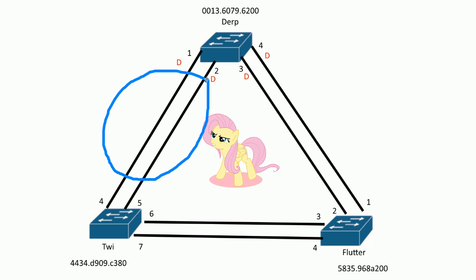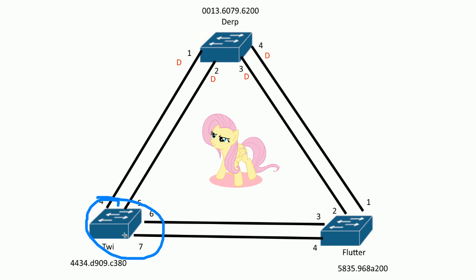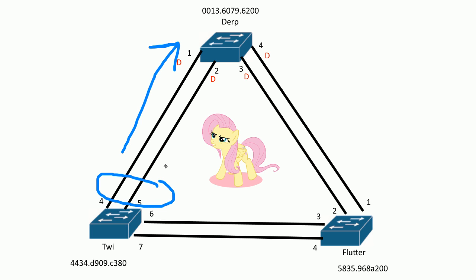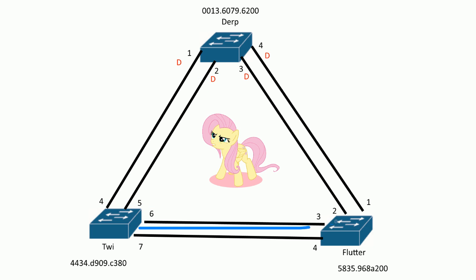Let's look at twine. If we look at all the ports, specifically the ones connected to derp, these look like they have the lowest cost — it's the shortest path, but not necessarily. This could have a lower cost, but in this topology it doesn't because all of these are fast ethernet. So this would be a cost of 19, 19, and this is just 19.